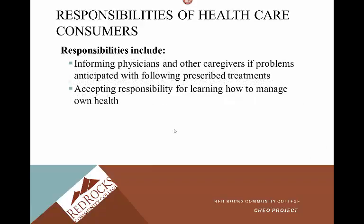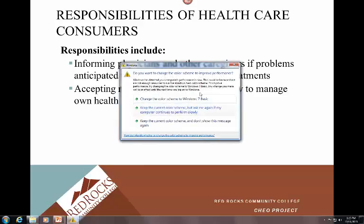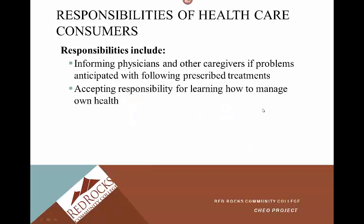Consumers are responsible for informing physicians and other caregivers if problems are anticipated with following prescribed treatments. For example, if Mrs. Jones is diabetic and sent home on insulin but is terrified of needles, she needs to inform her physician that will be an issue so a plan of care can be developed. Can a family member give those injections? Can a home health nurse come? Making sure the consumer can follow through with prescribed treatments is essential.